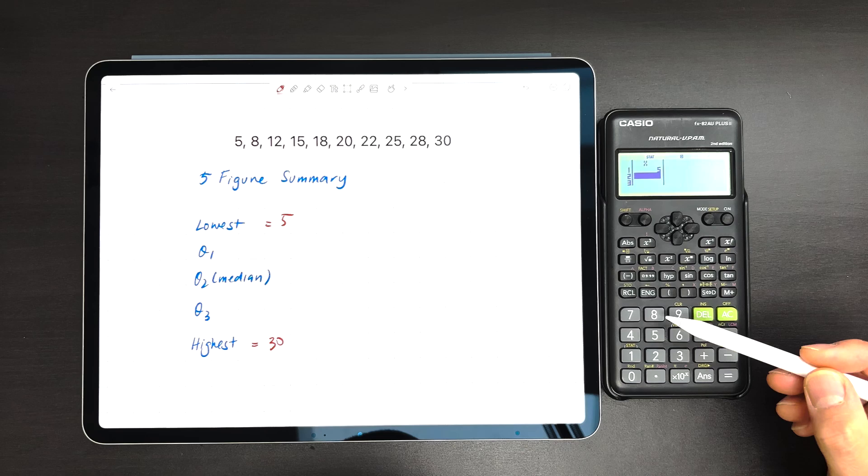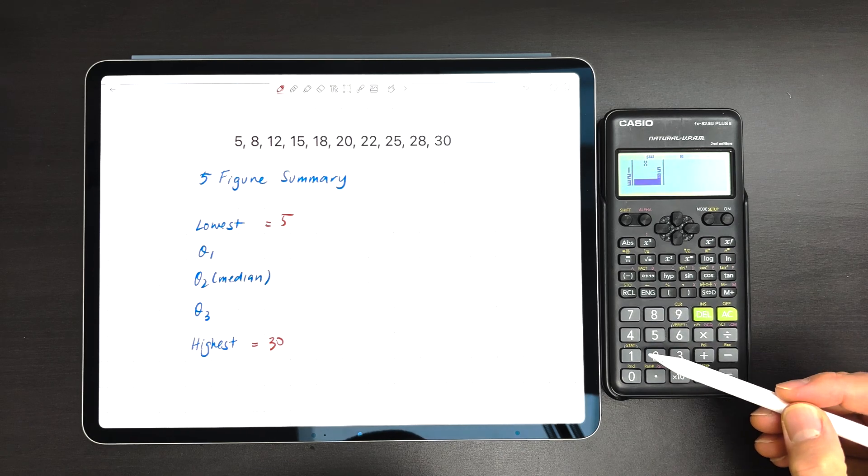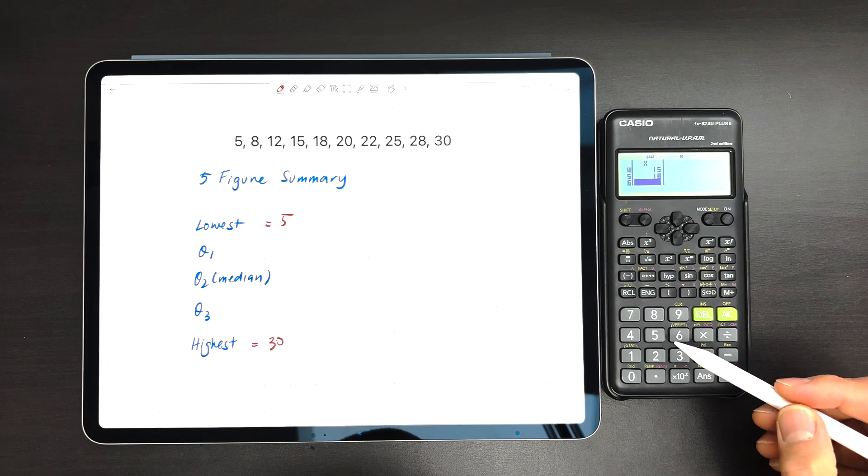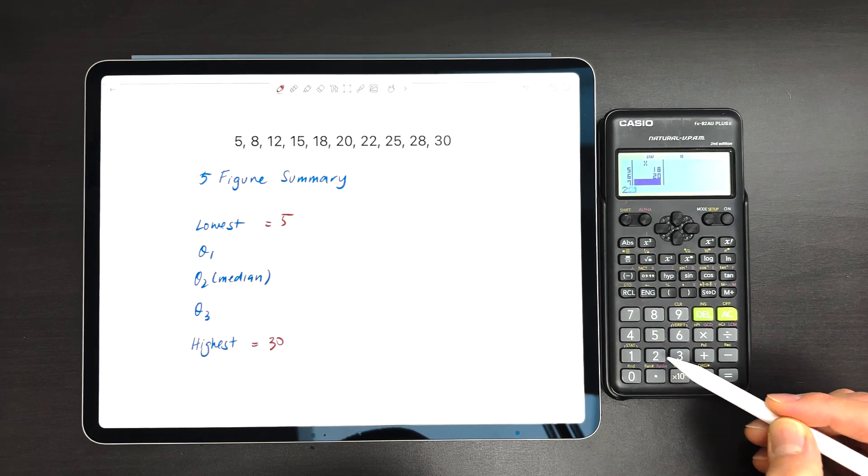So we go 5 equals, 8 equals, 12 equals, and so on. We want to put all these numbers in, making sure you don't miss any.